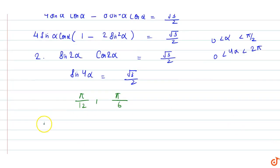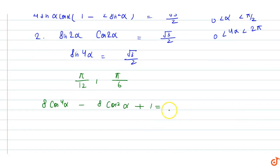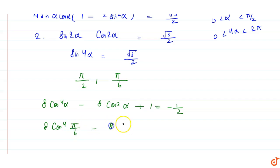तो second equation है: 8 cos⁴α − 8 cos²α + 1 = −1/2. तो π/6 put करेंगे: 8 cos⁴(π/6) − 8 cos²(π/6) + 1 = −1/2.